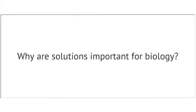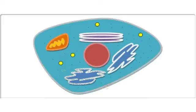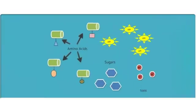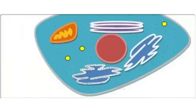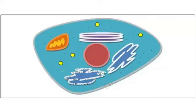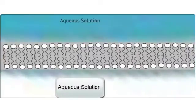So why are solutions so important for biology? Every cell is filled with an aqueous solution known as the cytoplasm. Dissolved in this solution are all of the components that the cell needs to function: amino acids, ATP, sugars, and other important molecules. The environment that a cell is surrounded by is also usually an aqueous solution. The barrier between a cell and its environment is the selectively permeable plasma membrane, made of a bilayer of phospholipid molecules.